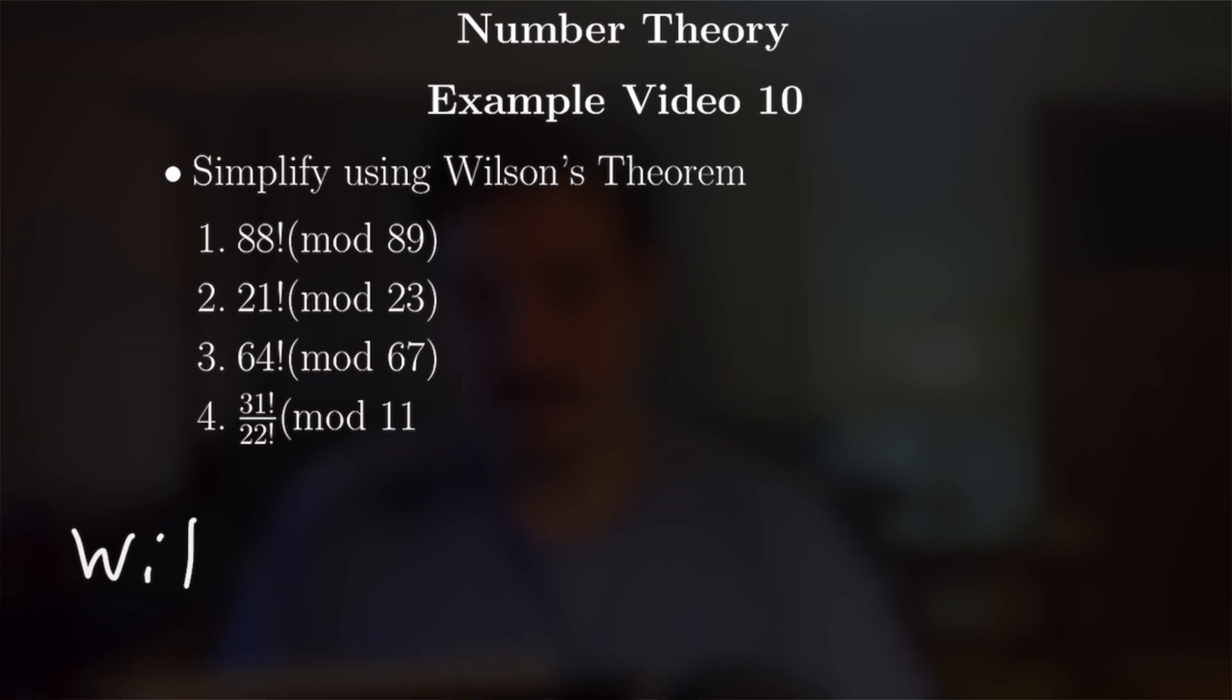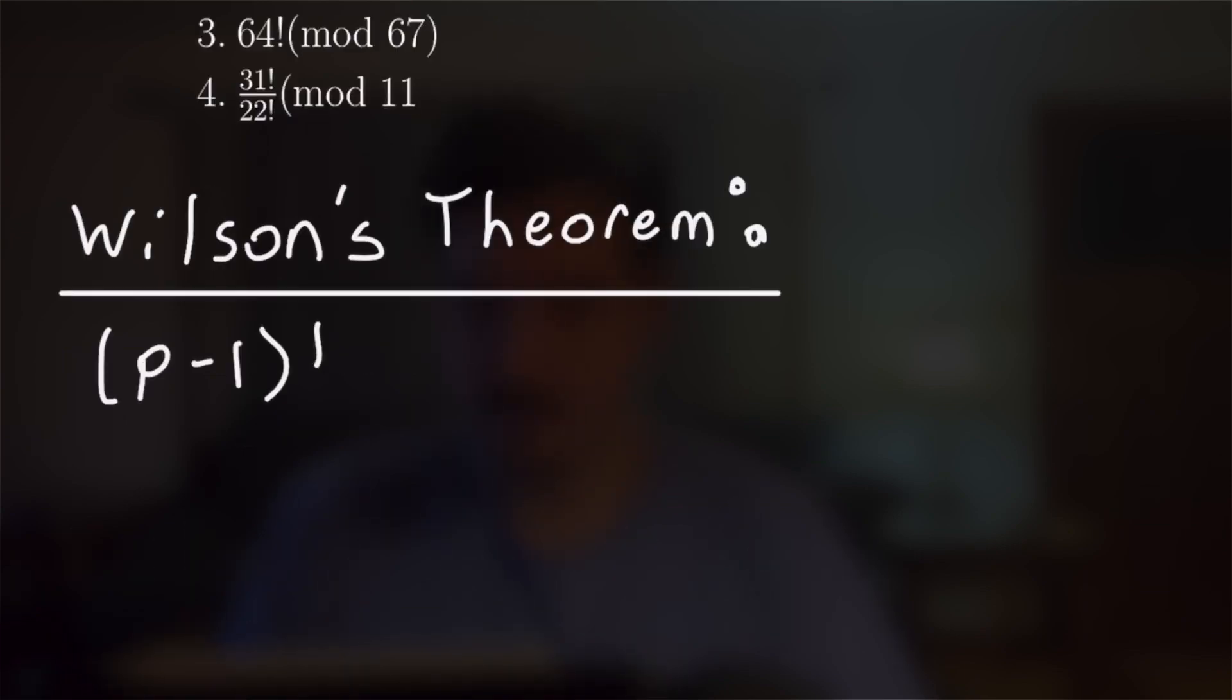So for these first four examples here, we're going to be simplifying using Wilson's theorem. Since we're going to be using it all video, we should probably state what Wilson's theorem is. Wilson's theorem says that (p-1)! is congruent to -1 mod p.